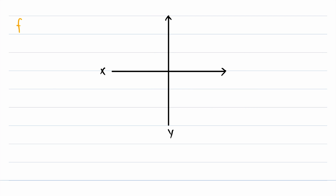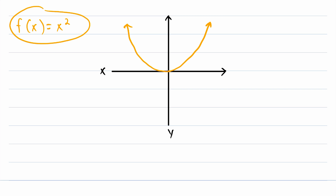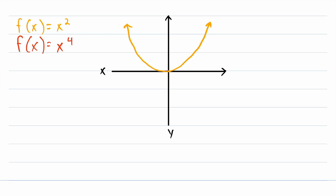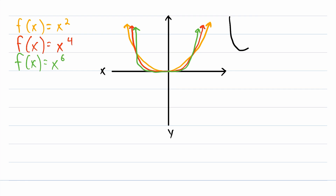Let's look at some graphs of power functions. Here is a power function we're all probably familiar with: f of x equals x squared. Notice that this power function has a positive even exponent. Let's look at the power function with the next largest even exponent, x to the power of 4, and then x to the power of 6. Every time we have a power function with a positive even exponent, the graph of the function will have this sort of parabolic shape.